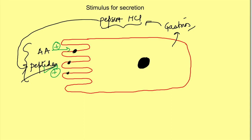When we eat, there is gastric distension, and this gastric distension causes stimulation of the vagus nerve, causing release of gastrin-releasing peptide (GRP). There is a receptor for this gastrin-releasing peptide on the G cell, and it can act on G cells to stimulate the secretion of gastrin.